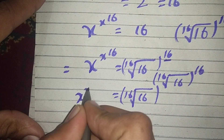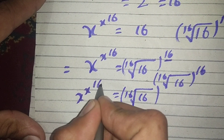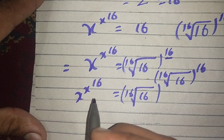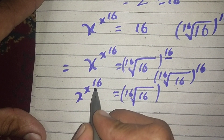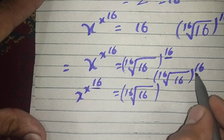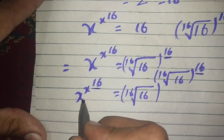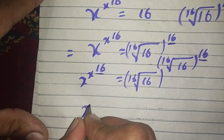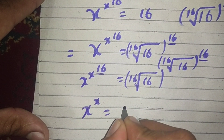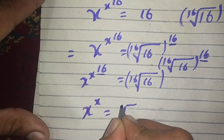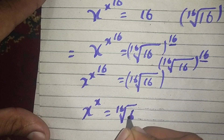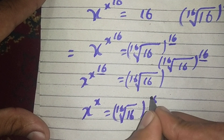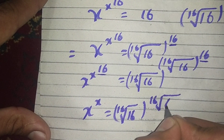This is equal to x power x power 16. From here we have 16 equals 16, and comparing x power x, therefore x power x equals the 16th root of 16, raised to the power of the 16th root of 16.